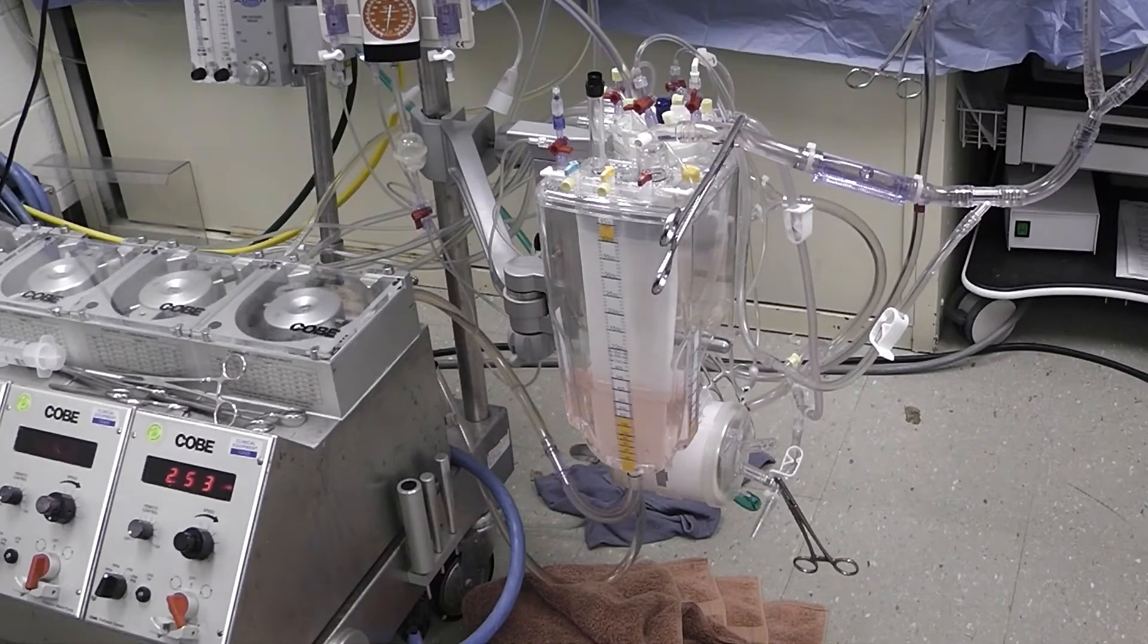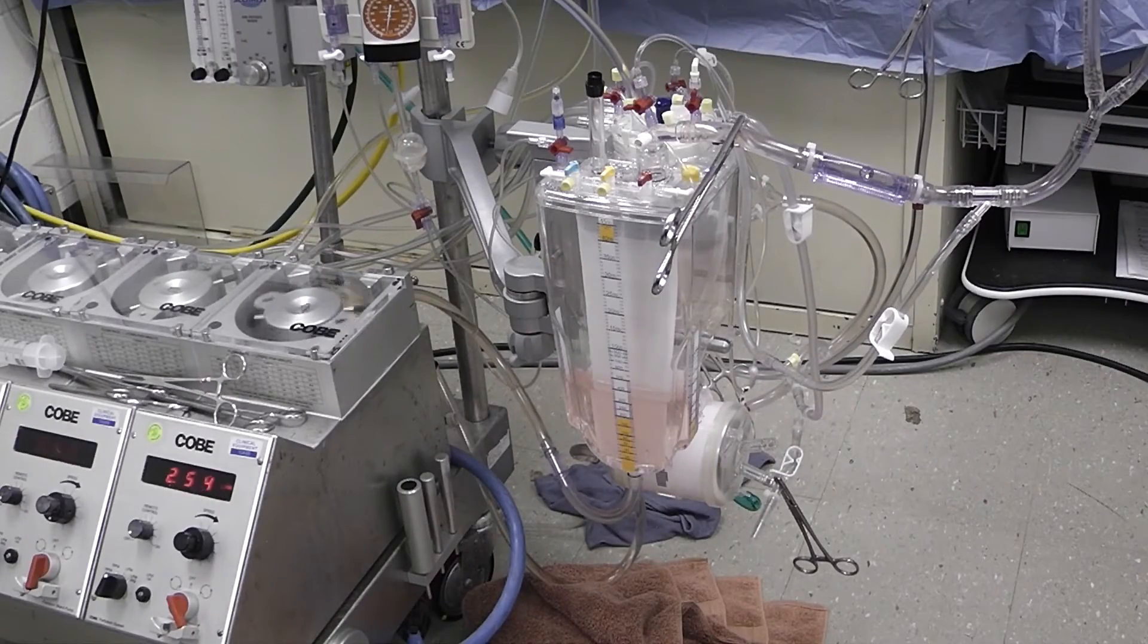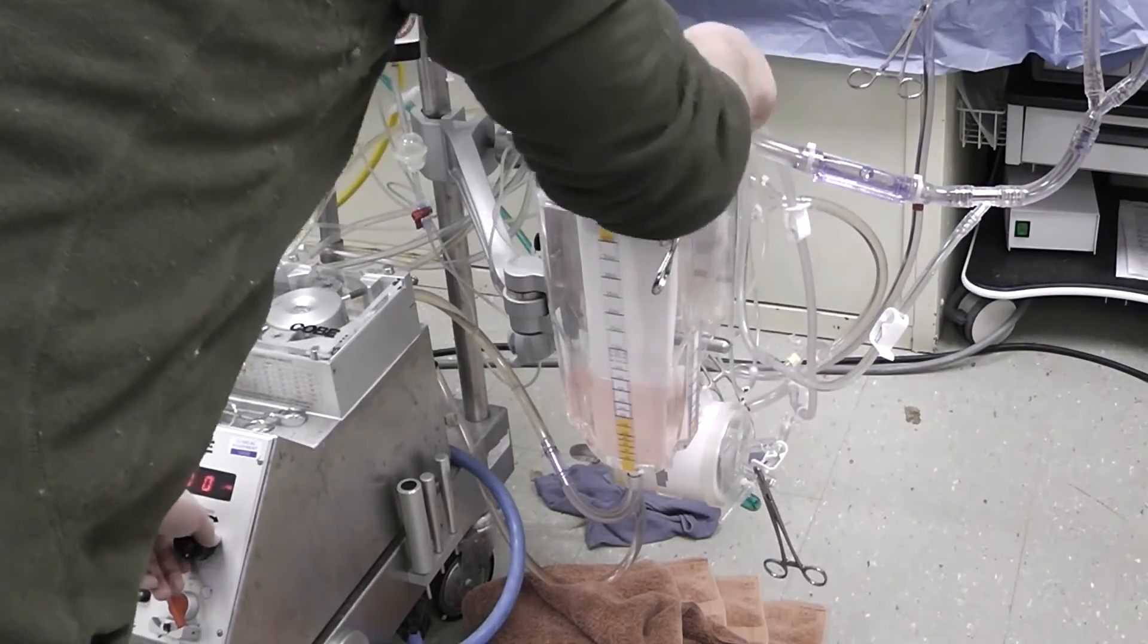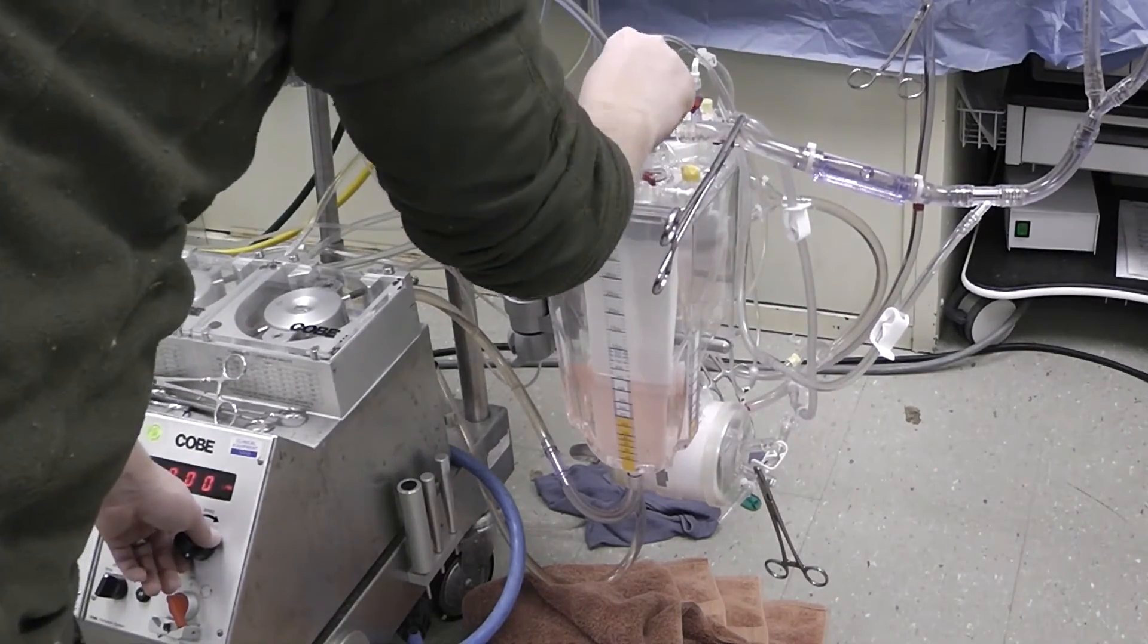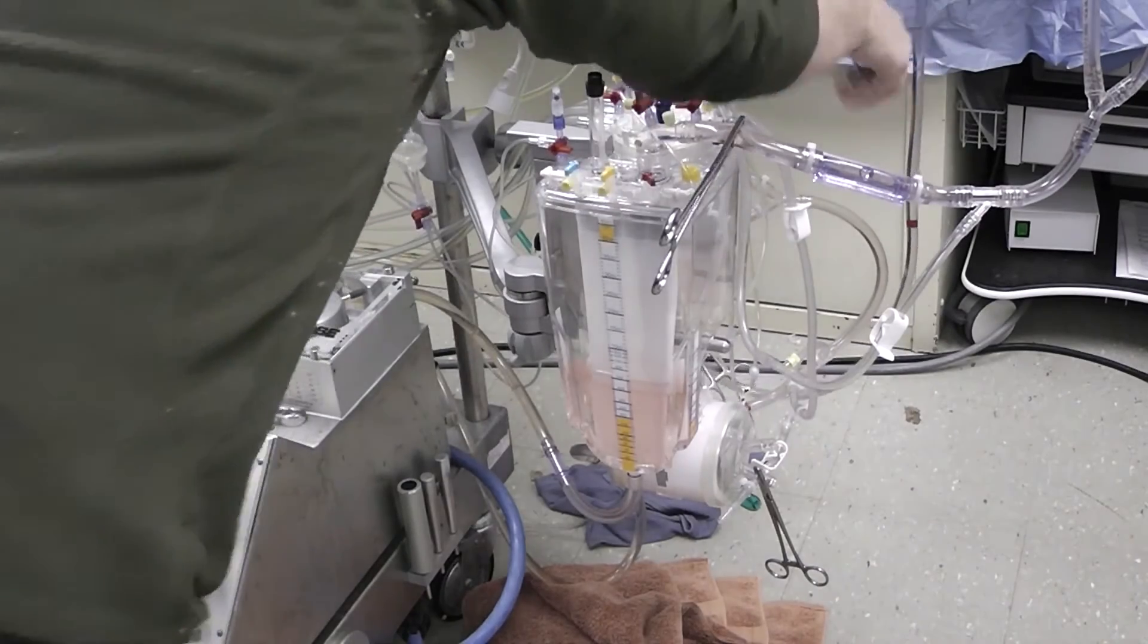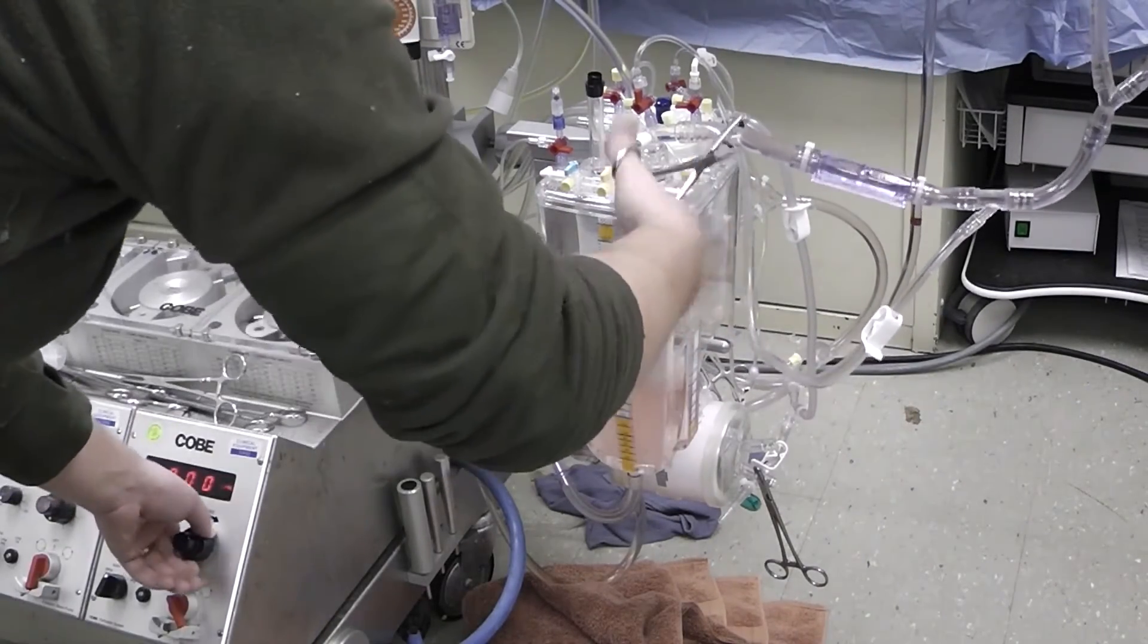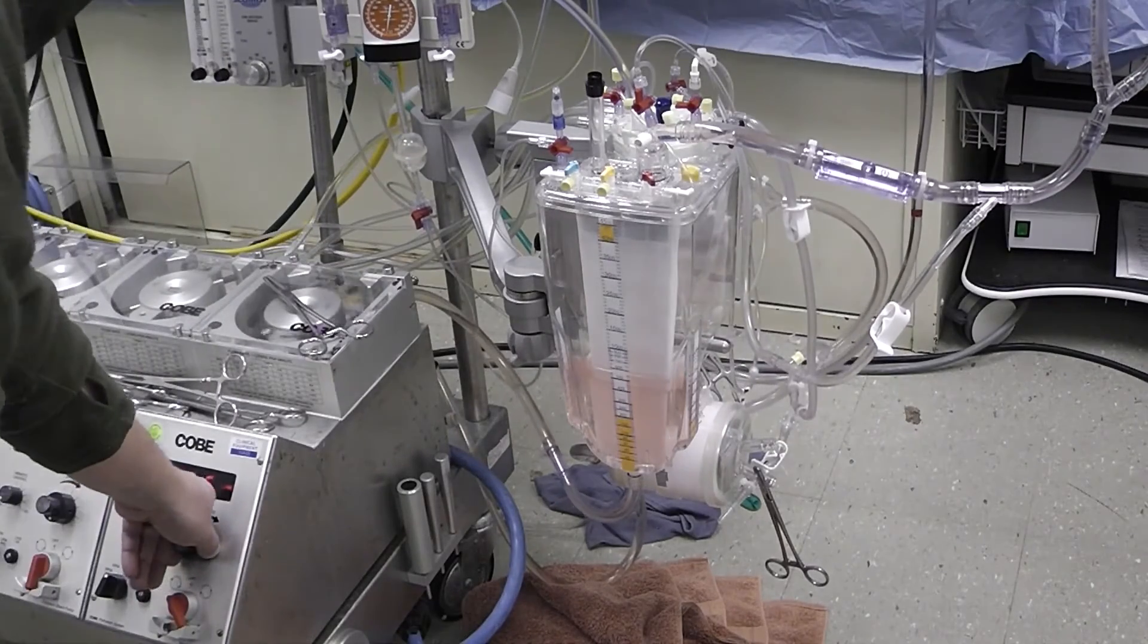Now we're going to shut down the pump so that we can reinitiate bypass. So I'm going to shut down the pump, close all the purges, I'm going to remove the arterial line clamp that was still remaining, turn the pump back on, and reinitiate flow.